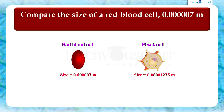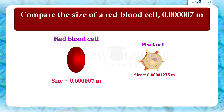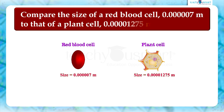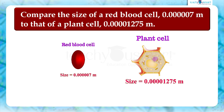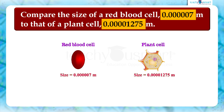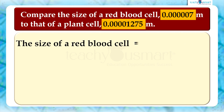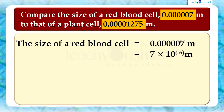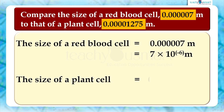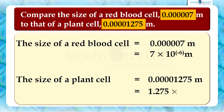Next, compare the size of a red blood cell, which is 0.0000007 meters, to that of a plant cell, which is 0.00001275 meters. Here the given quantities are in the usual form, so first we have to write them in scientific form. The size of a red blood cell equals 7 multiplied by 10 raised to minus 6 meters, and the size of a plant cell equals 1.275 multiplied by 10 raised to minus 5 meters.